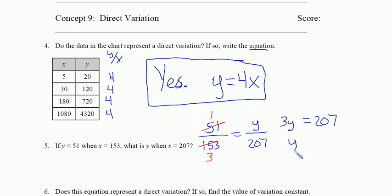If I divide both sides by 3, y is equal to 69. We should be able to check that: is 69 divided by 207 the same as one-third? That's what 51 over 153 is. If it is, it's correct. If it's not, we have more work to do, and it's correct.